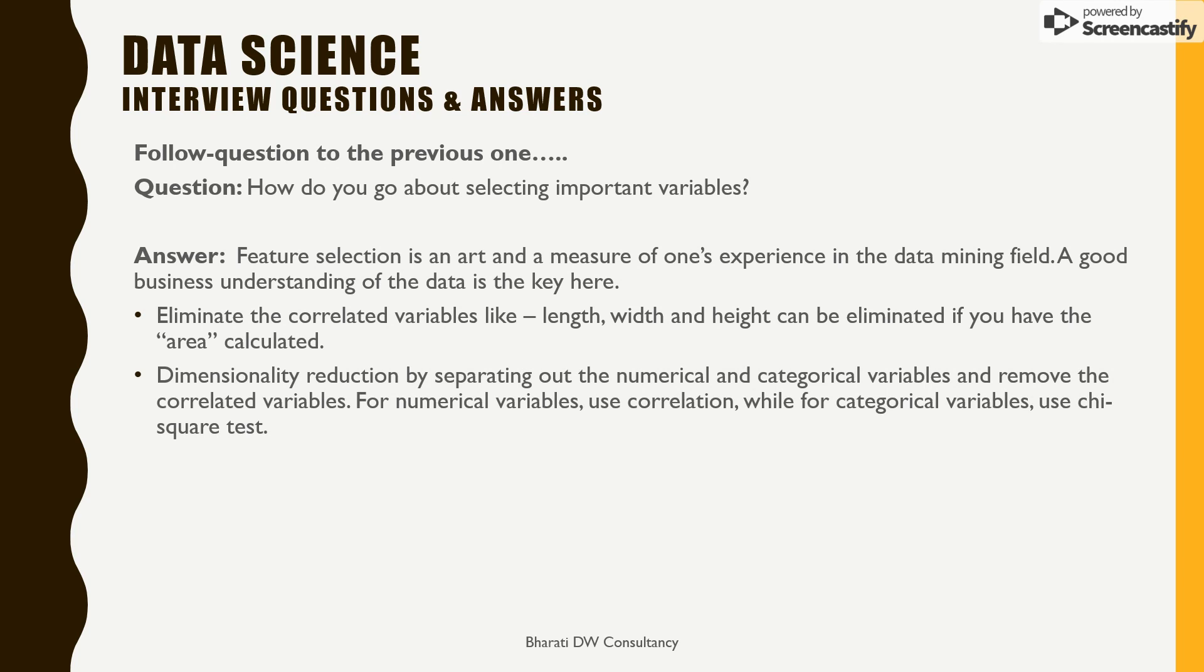This is known as dimensionality reduction where we look at numerical and categorical variables that can be eliminated using correlated variables. For categorical, we can also use chi-squared test. The principal component analysis is also important to understand the variance in the data set. Please note that dimensionality reduction and PCA are very closely related to each other.